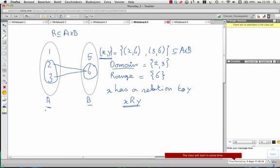The subset would be, for instance, if I have A and B with elements 1, 2, 3 and 5, 6, and I only have the relation between 2 and 6 and 3 and 6, where the pairs are (2,6) and (3,6). This, of course, is a subset of A times B.